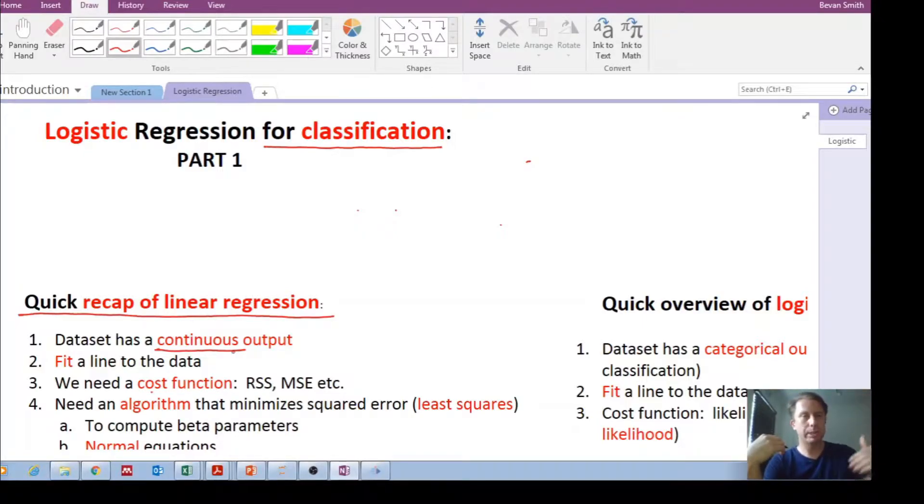It's a continuous output, or grades, say between 50% and 75% or 100%. It's a continuous output. So what did we want to do? We've got this dataset, we want to fit a line to the data.